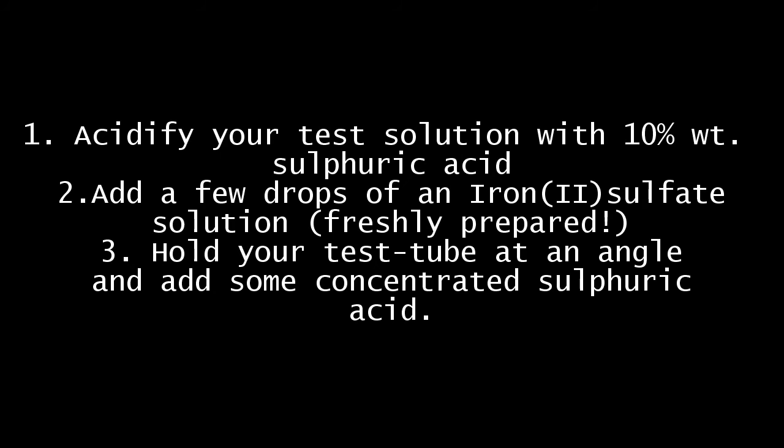Now, let's take a look at the brown ring test for the detection of nitrate ions. Its principle is very simple. First, you acidify your test solution with some dilute sulfuric acid. Then, you add some iron(II) sulfate solution. After that, you carefully add concentrated sulfuric acid.